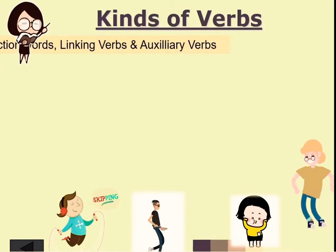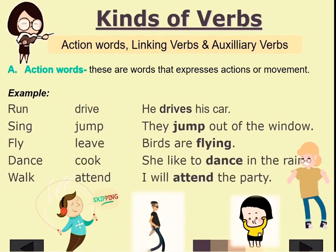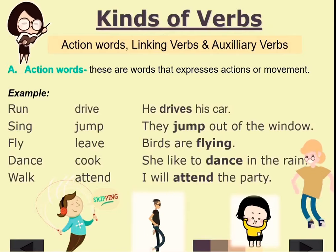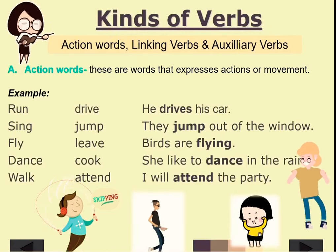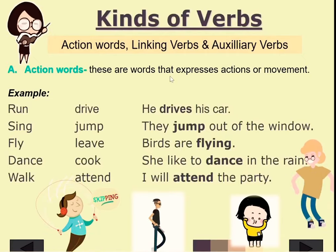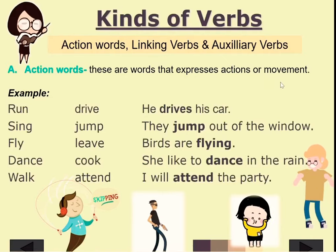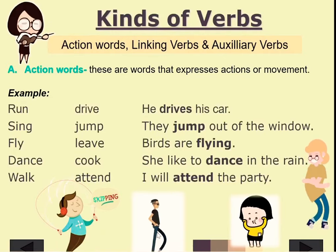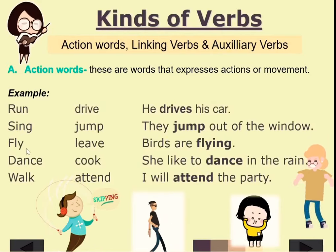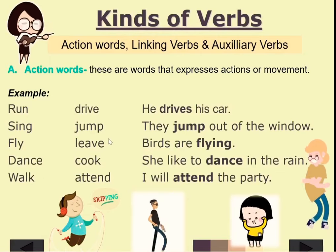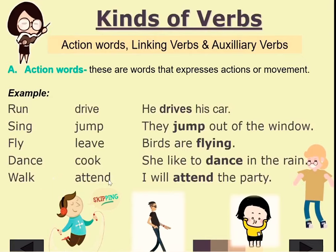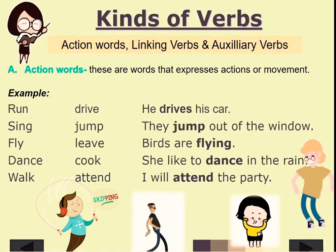We have action words, linking verbs, and auxiliary verbs. Action words are the verbs we all know — they express actions or movement like running, dancing, jumping, singing, flying, walking, driving, leaving, cooking, and attending. Any action that we can do is an action word, also known as the main verb.